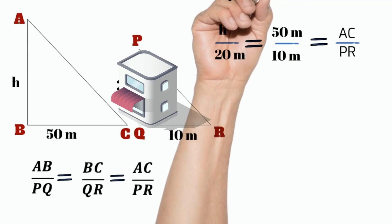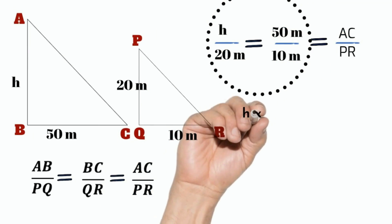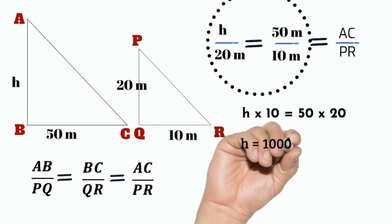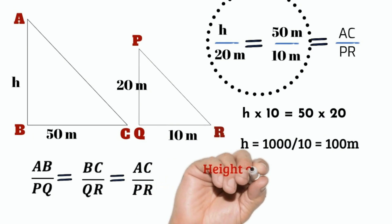Cross multiply the first two ratios: h by 20 equals 50 by 10. h into 10 equals 50 into 20. Therefore, h equals 1000 divided by 10 equals 100 meters.